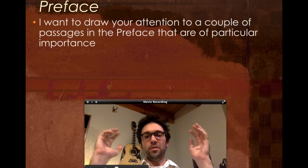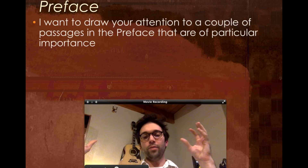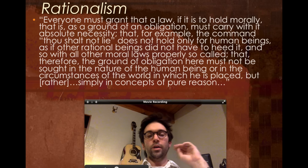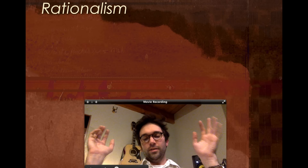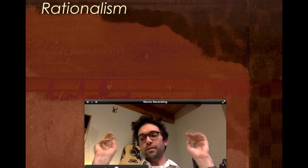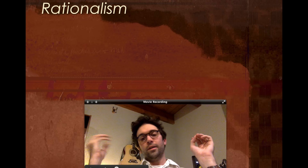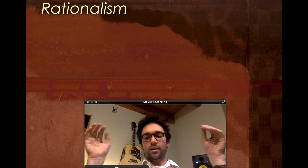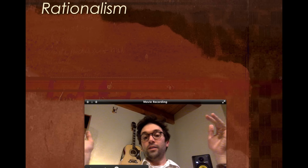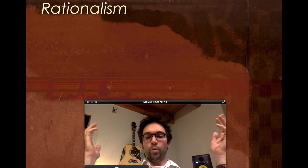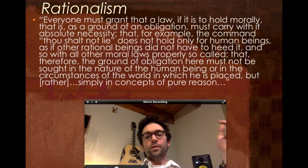We're still on the preface. Before we move on to the stuff you've read, I want to draw your attention to a couple of passages from that preface that I think are of particular importance. The first harkens back to the clash between rationalism and sentimentalism. We talked about Hume as a sentimentalist. We talked a little about what rationalism entails, but we haven't read a rationalist until now. We're not reading Kant in the context of the rationalism-sentimentalism debate, but Kant is a rationalist.